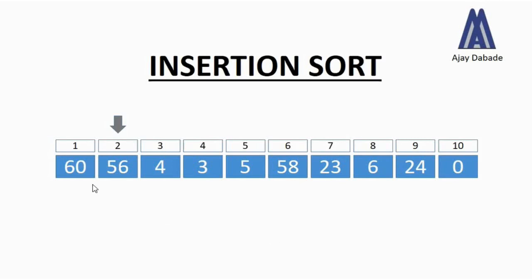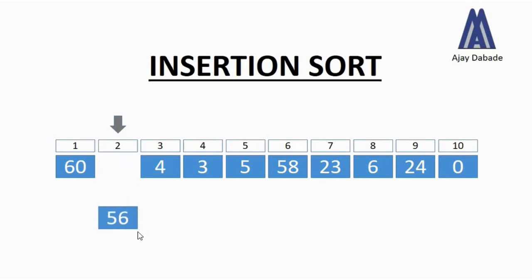There are random numbers in front of you, and we are going to sort them using insertion sort. The numbers above are the position numbers — that is, number one to number ten. At position one we have 60, at position two we have 56, and so on. In insertion sort we always start with position two. We take the number 56 and compare it with the left-hand side, that is number 60 at position one. Since 56 is less than 60, we will shift the number 60 one step towards the right.